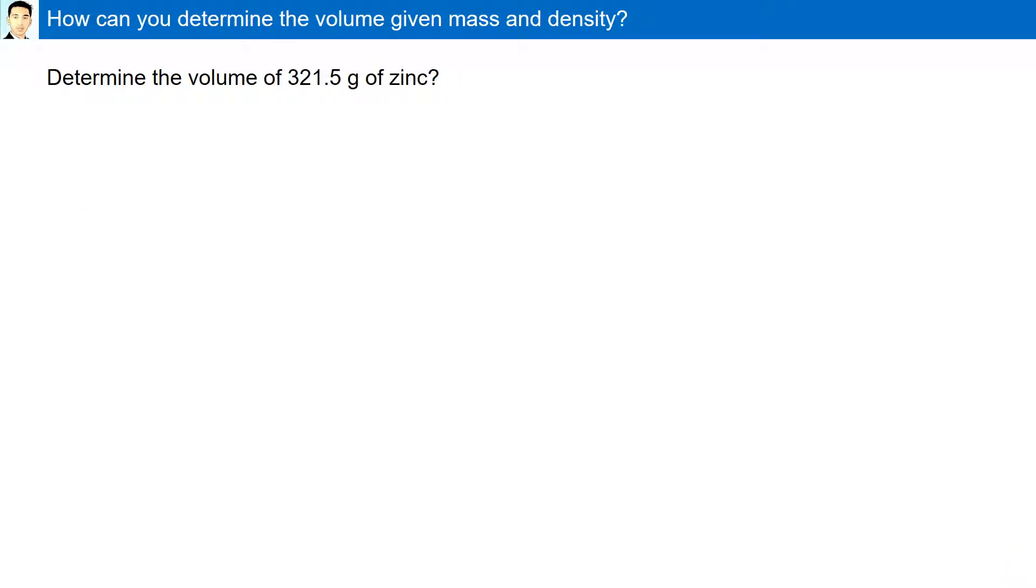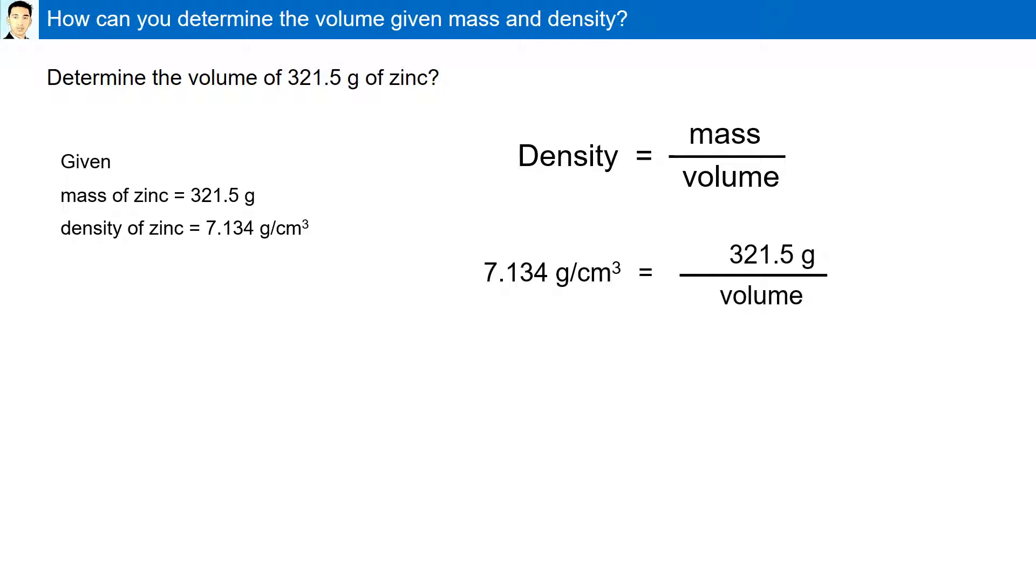How can you determine the volume given mass and density? Determine the volume of 321.5 grams of zinc. Here we are given the grams of zinc as 321.5. And looking up reference table S, we can find the density of zinc as 7.134 gram per centimeter cube. Substituting in our density formula, we have 7.134 gram per centimeter cube is equal to 321.5 gram divided by volume. Rearranging the formula, we have 45.07 centimeter cube.